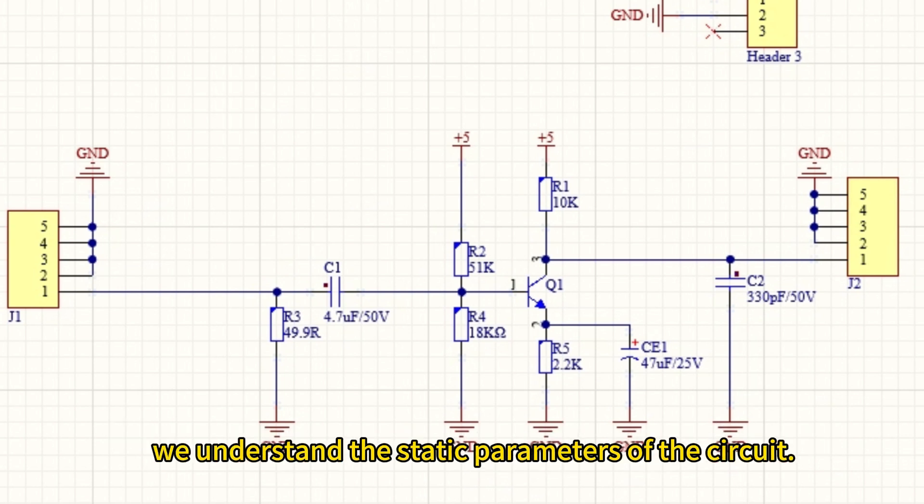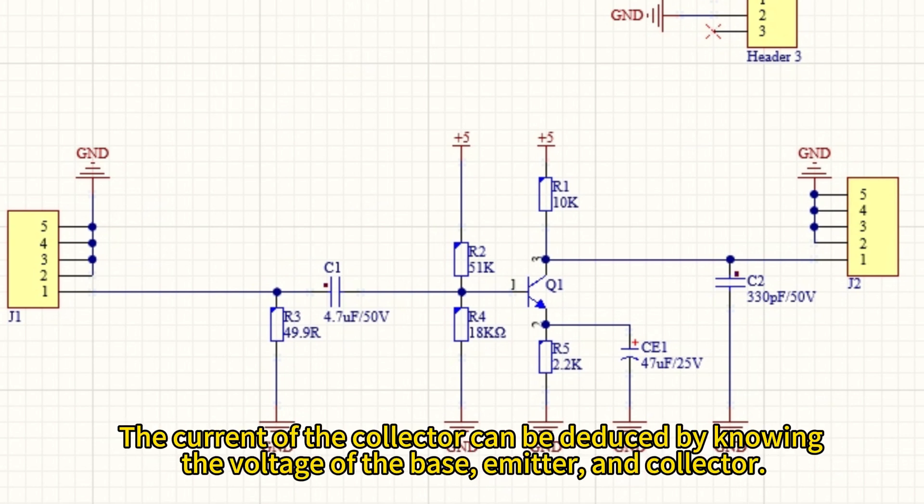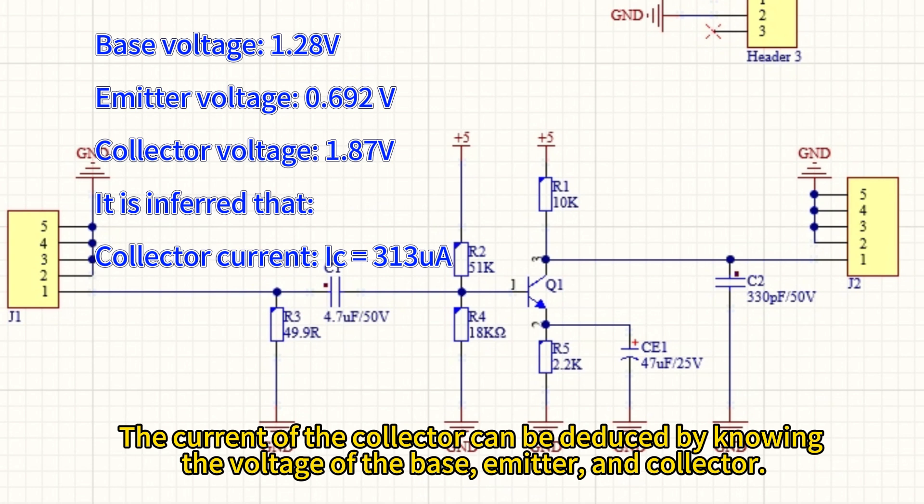We understand the static parameters of the circuit. The current of the collector can be deduced by knowing the voltage of the base, emitter, and collector.